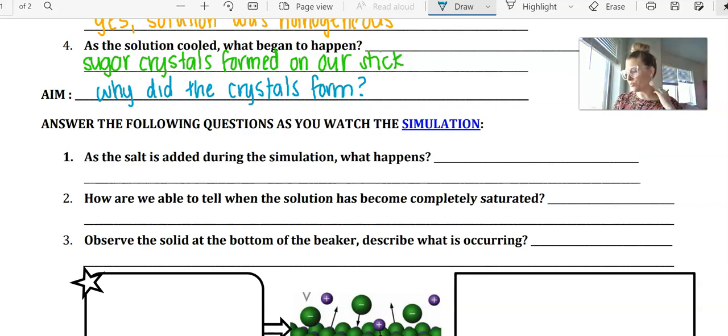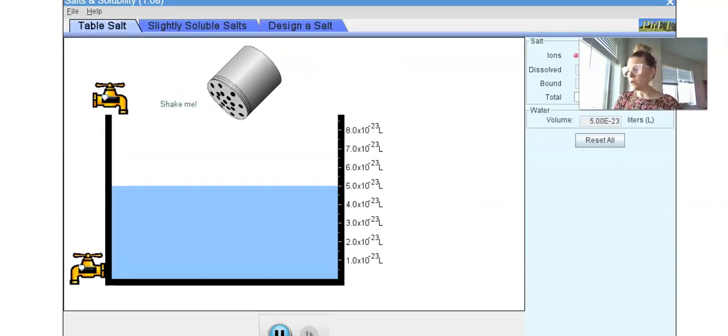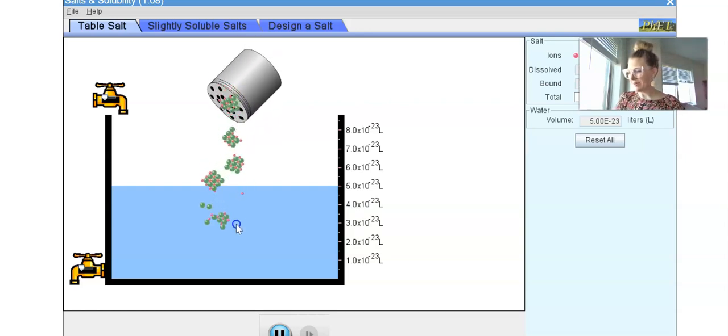So we're going to be looking for three questions. So as the salt is added, what happens? How are we able to tell when the solution was saturated? And then observe the solid at the bottom of the beaker and describe what is happening. So here we have our shaker and salt. So I'm going to go ahead and start adding that to solution. And you'll notice that as we add it, we can actually see that salt dissolve. The solid becomes part of the aqueous solution.